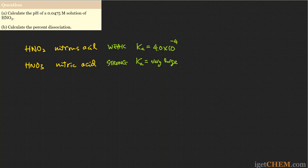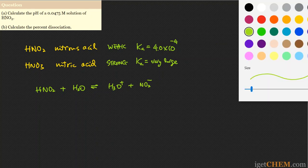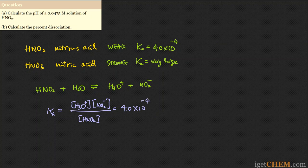Let me first write down the equilibrium and the equilibrium expression. For the reaction of nitrous acid with H₂O acting as an acid, HNO₂ donates a proton to H₂O, making H₃O⁺ and itself becoming NO₂⁻. The acid dissociation equilibrium constant Ka equals [H₃O⁺][NO₂⁻] divided by [HNO₂].